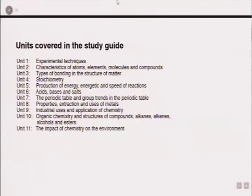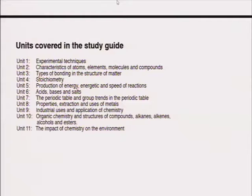The next slide looks at the units covered in the study guide. Unit 1 looks at experimental techniques. Unit 2 looks at characteristics of atoms, elements, molecules and compounds. Unit 3 looks at the different types of bonding and the structure of matter — that is specifically one of the very important units you are supposed to have mastered for the exam. Unit 5 looks at production of energy, energetics and speed of reactions, also very important.